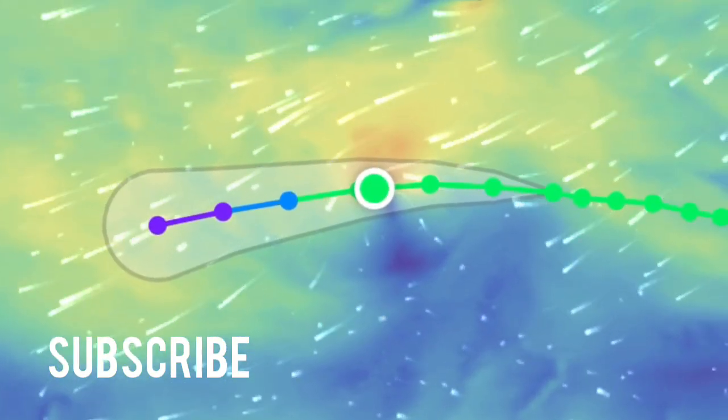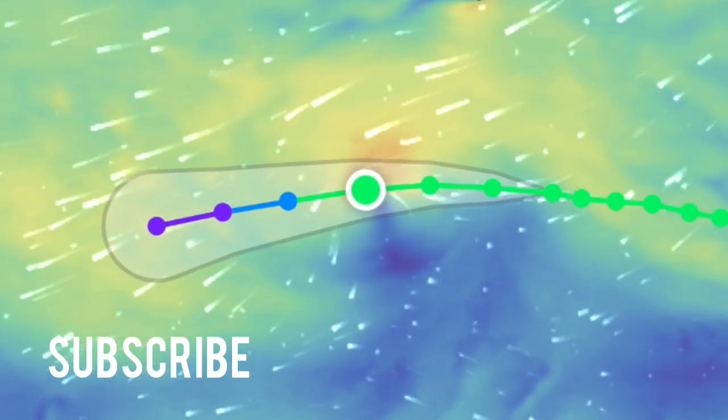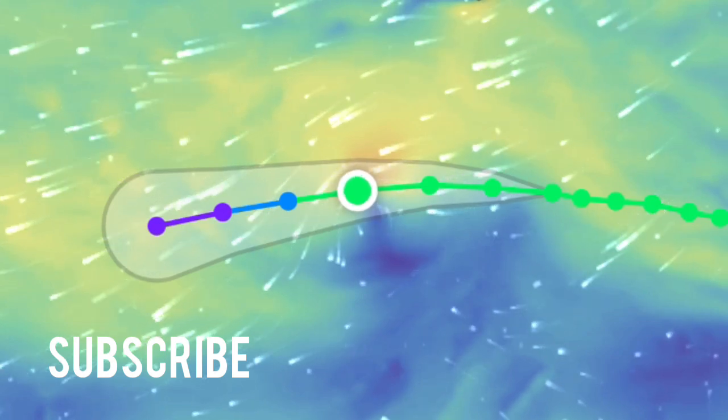Beyond 24 hours, the dynamical guidance suggests steady weakening, likely due to a gradual increase in northerly vertical wind shear produced by a strengthening ridge aloft to the north.